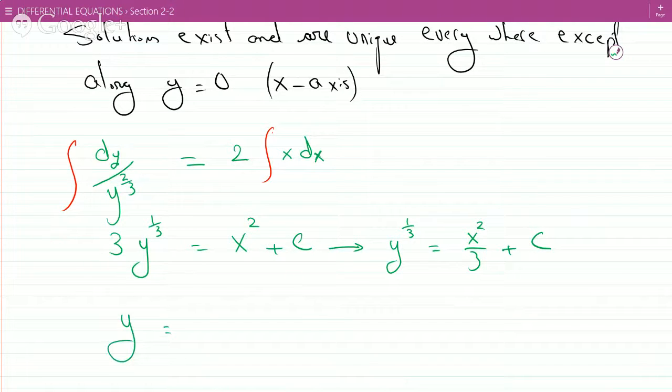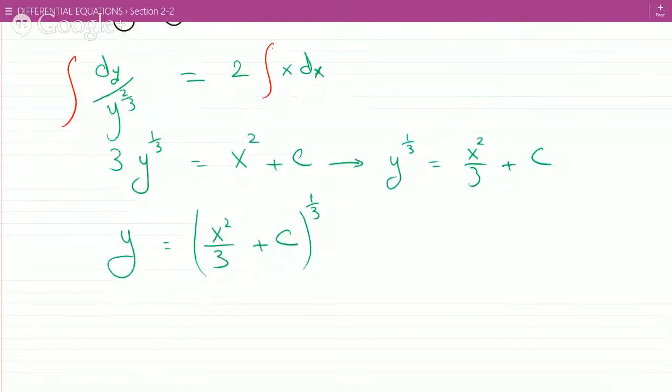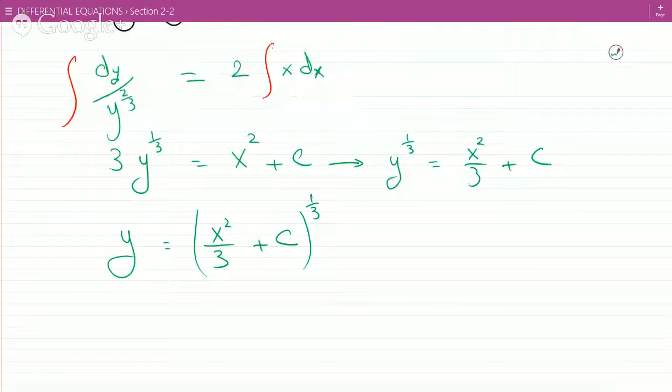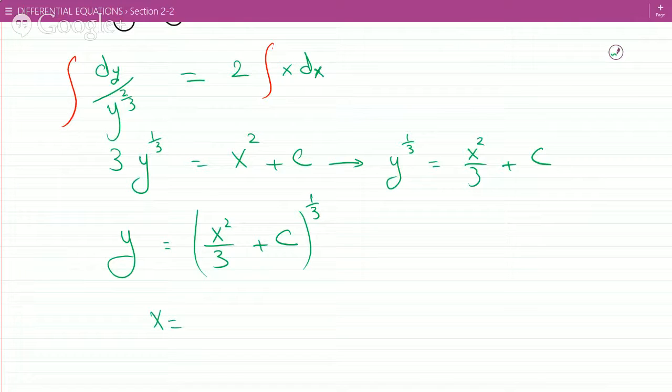So if you cube y to the one-third, you'd get y equals x squared over three plus c cubed. Now we do have a solution. But if you look carefully at this, what happens at x equals one versus x equals minus one?